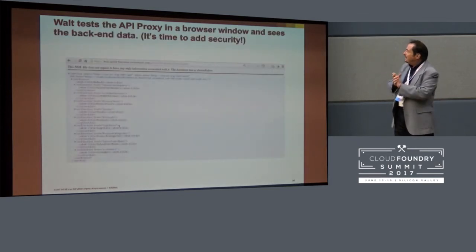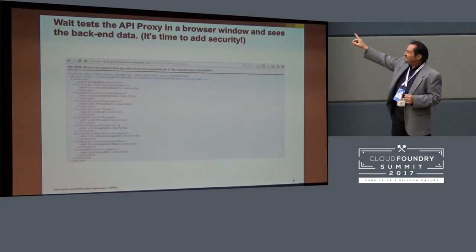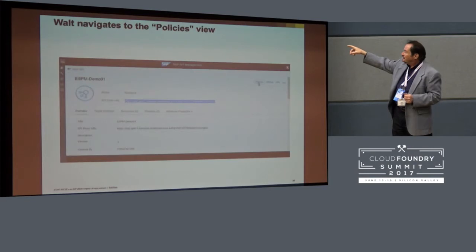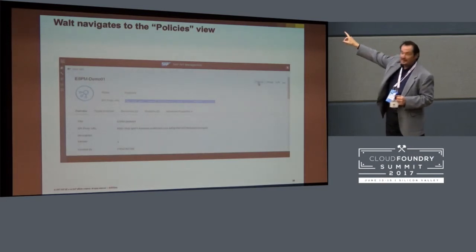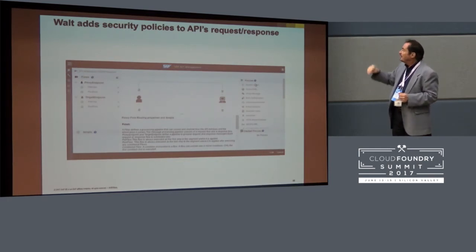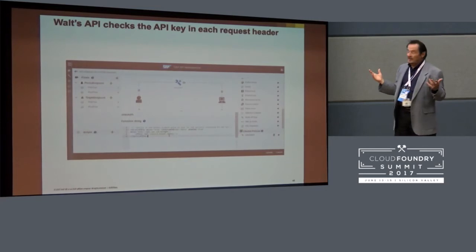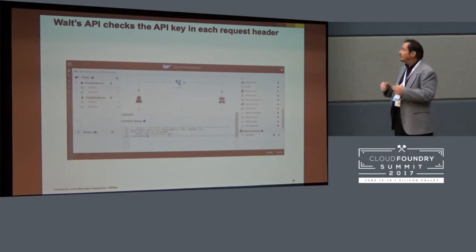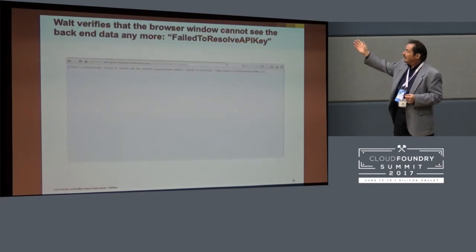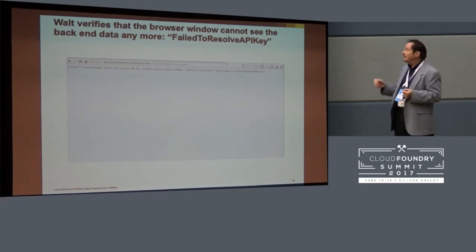He can copy that and paste it into Chrome, and he sees the back-end data — and that's bad. What he realizes is maybe that was a little too fast, and he goes on to add security. He goes to policies and can now add as many policies as he wants on the request and response paths of that API. A good one to add at this point is to check for an API key and verify that you have a good one. He puts that in right away. Now you can no longer get to your precious back-end data from Chrome because it's looking for a valid API key.